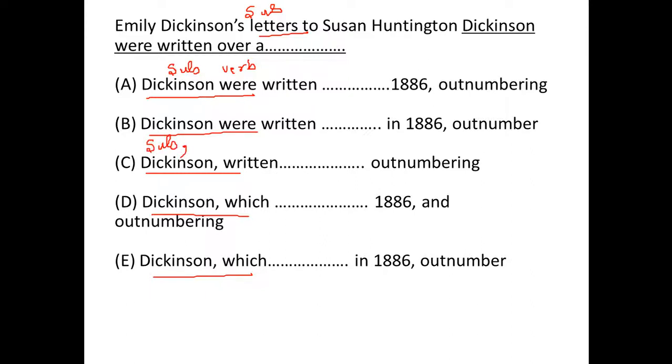The moment you see subject followed by comma, immediately look out for a second comma and we must have a verb after second comma. Now, in option C, after Dickinson we have a comma and after that there is no other comma. That means verb is missing in option C. Eliminate option C.